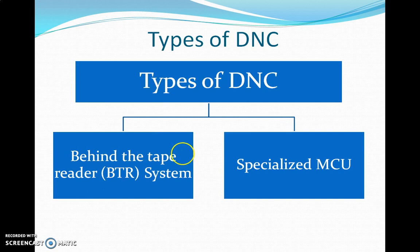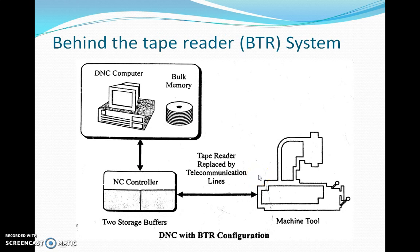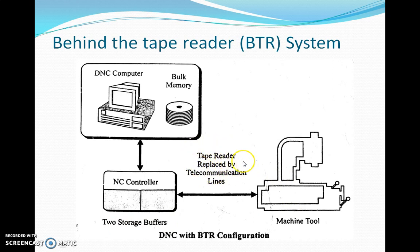There are two types of DNC: one is the behind the tape reader (BRT) system, and the other is the specialized MCU. The BRT system block diagram shows a DNC computer with bulk memory, an NC controller with two buffer storages, telecommunication lines which replace the tape reader, and the machine tool itself.